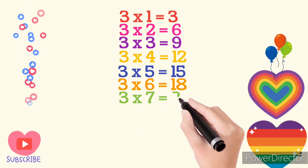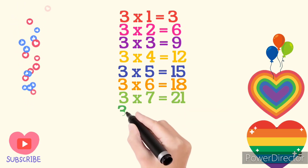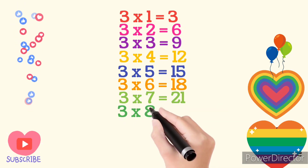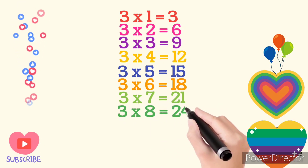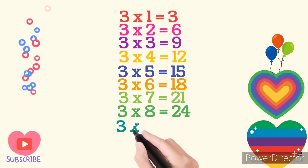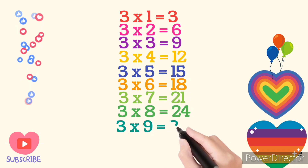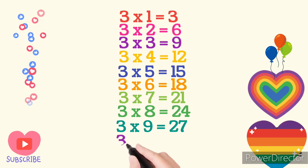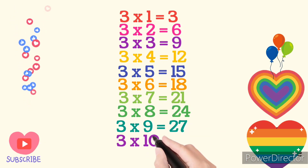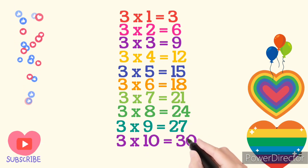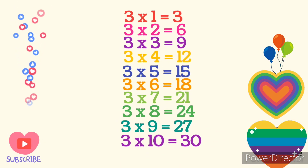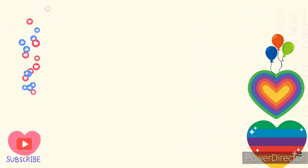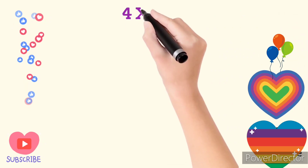3 times 7 are 21. 3 times 8 are 24. 3 times 9 are 27. 3 times 10 are 30. Table of 4.